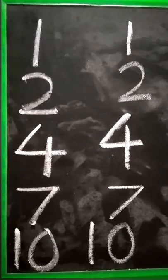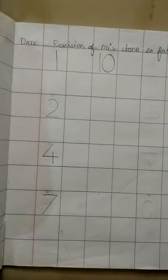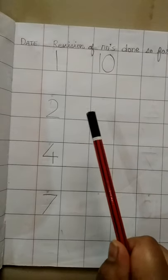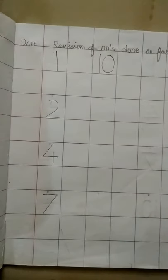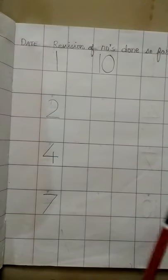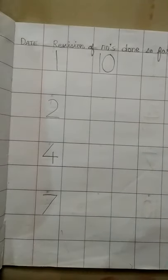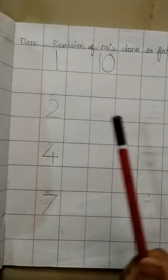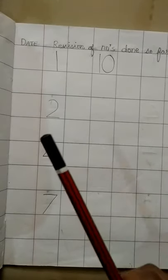So children, what you have to do is you have to write these numbers in the notebook. Children, this is how we are supposed to write. Okay? So I have used pencil. And a reminder for you, you all will be using crayon to complete your work.